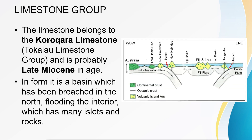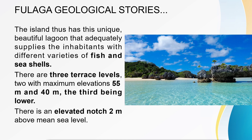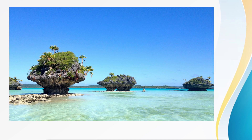These are some more pictures that talk about the limestone found on some of those mushroom islands. In actual fact, the limestone you see in Fulanga belongs to the Korungar limestone or Tokalau limestone. Geologists in Fiji categorize a lot of these limestones, and this is what it is called: Korungar limestone or Tokalau limestone. It's so beautiful to see these pictures from Fulanga, and I want to acknowledge the children and families from the beautiful paradise of Fulanga.